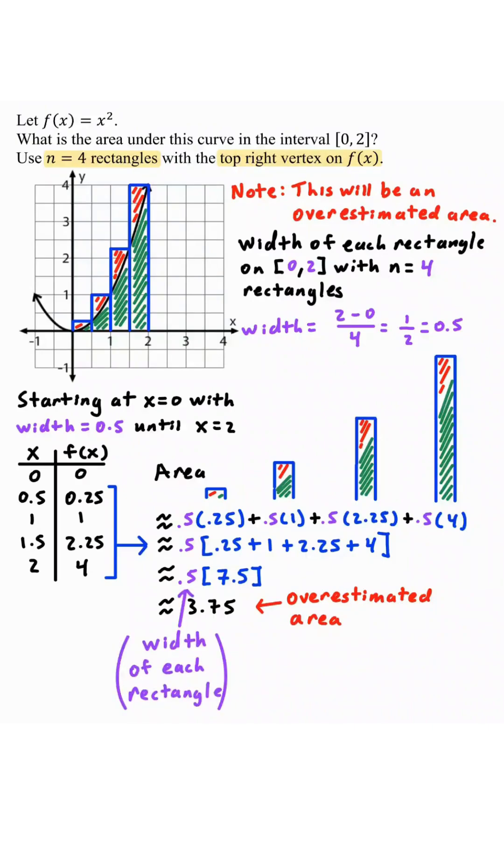So the 0.5 is considered as the width of each rectangle, where the 7.5 is the sum of the heights of each rectangle. So our overestimated area is the width of each rectangle times the sum of heights of each rectangle.